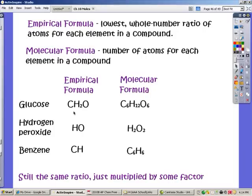Same thing here with hydrogen peroxide. H2O2 is the normal formula for hydrogen peroxide, but its empirical formula, if I reduce that down, is just HO.